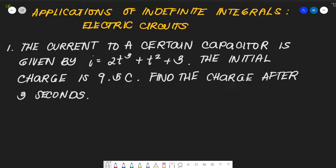Let's have our first example. The current to a certain capacitor is given by i = 2t³ + t² + 3. The initial charge is 9.5 coulombs. Find the charge after 3 seconds. In solving electric circuits, we need to know several equations. Unlike previous indefinite integral applications where we derived the equation, for electric circuits we already have a given equation.